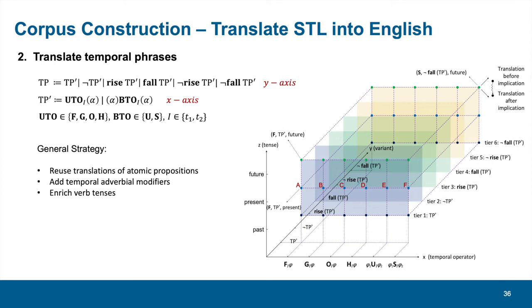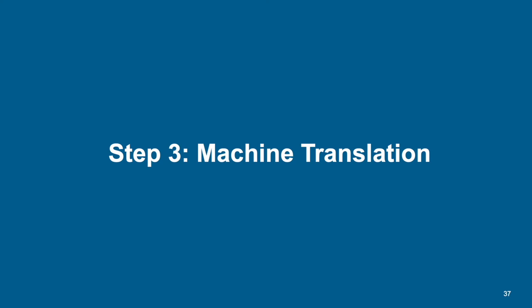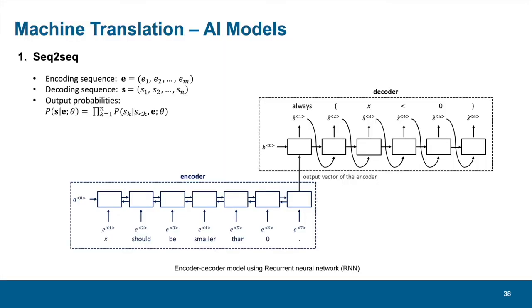This is the general strategy. Now we reach the last step, namely machine translation. We firstly consider the seq2seq architecture. This is the most fundamental model in neural translation. The general concept is to divide the whole procedure into one encoder and one decoder. The encoder reads the input English requirement, and the decoder generates the corresponding STL formula. Each symbol is called a token, and is represented as a vector. During decoding phase, the decoder actually adopts a probabilistic approach. For every step, the probability of outputting each token is based on the output of the encoder and all the decoded tokens in the last steps.